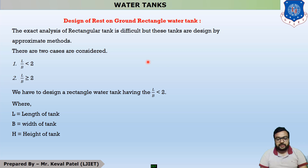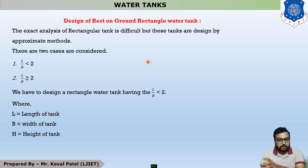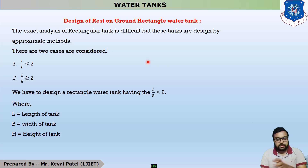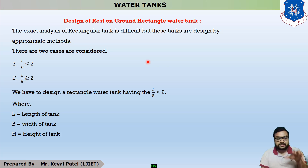The first component is the design of the top dome, the second component is the design of the top ring beam, and the third component is the design of the cylindrical portion. Students, in the INS type of water tank, you have to prepare for these three components because they are very important.